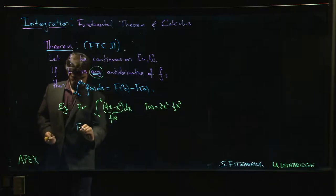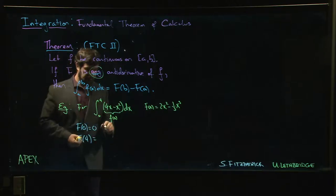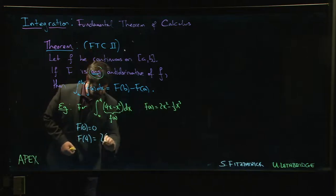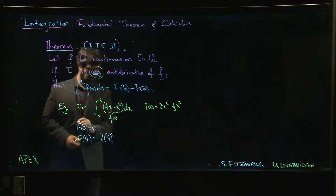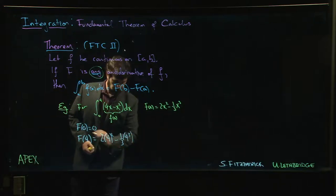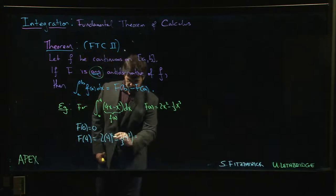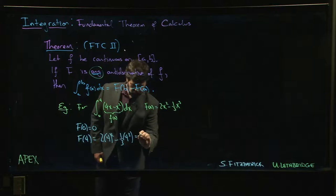F of 0 is just 0. What's F of 4? F of 4 is going to be 2 times 4 squared minus one-third of 4 cubed. Okay, so that is 16 times 2, which is 32.